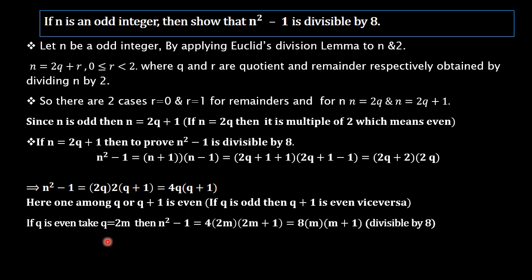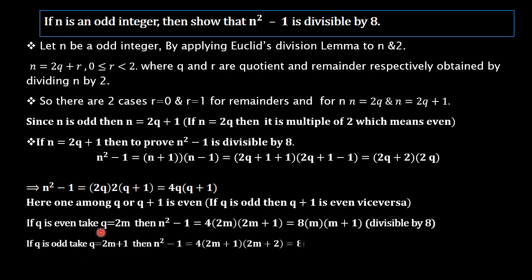To prove this, we consider the case where q is even. Taking q = 2m, where m is any integer, then n²-1 = 4 · q · (q+1) = 4 · 2m · (2m+1) = 8m(2m+1). So in this case, n²-1 is divisible by 8.